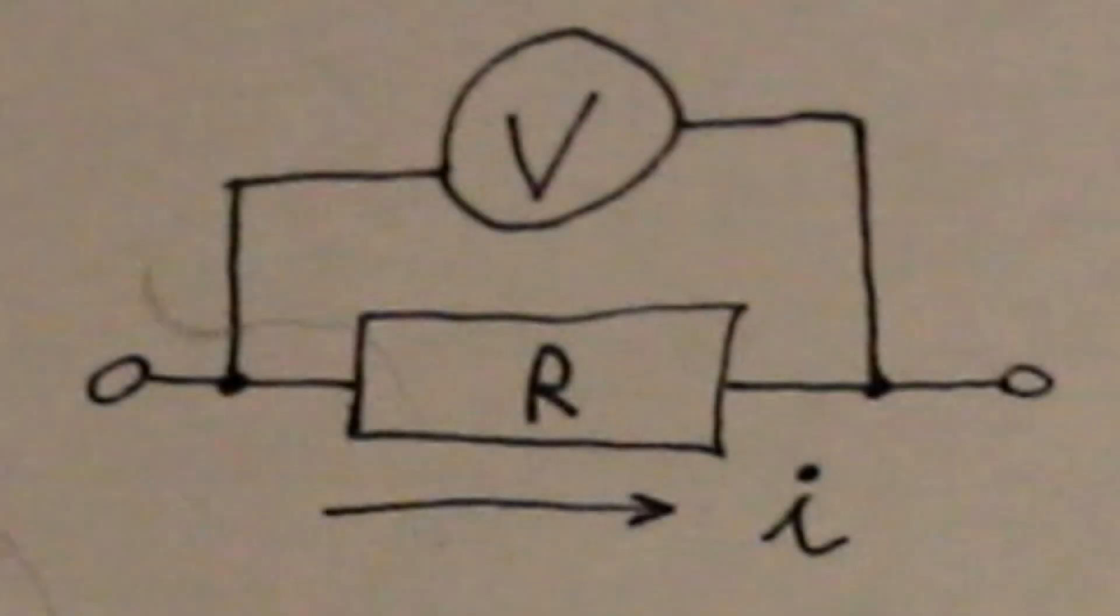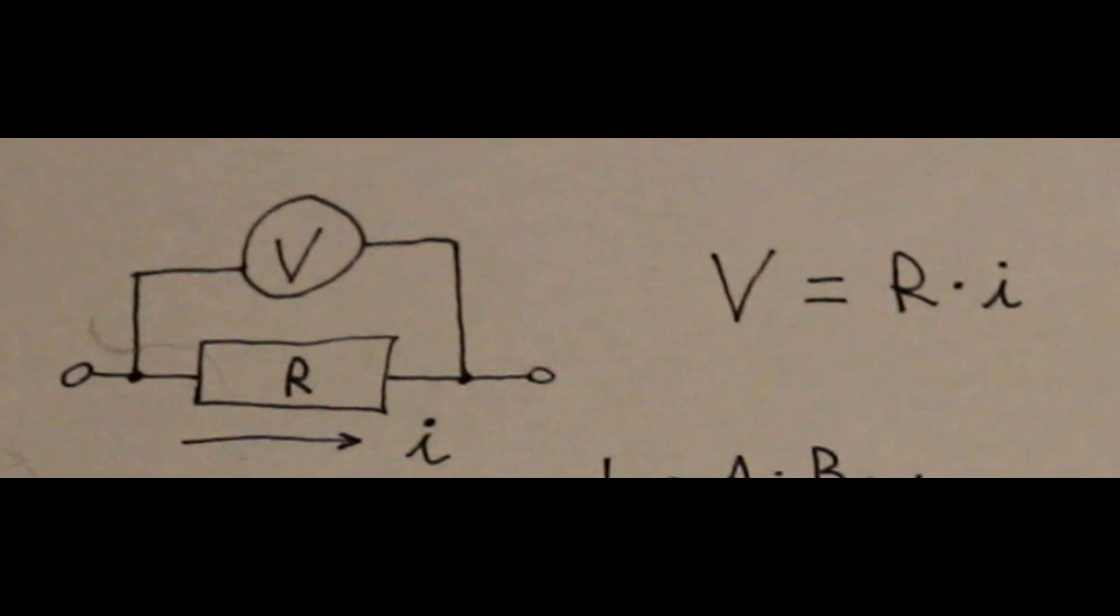In case you don't know, a shunt resistor is just a resistor of a known value at which we measure the voltage drop. We can then determine the current using Ohm's law, V equals R times I. So we have a simple linear relation between voltage and current. But this simple method works only for DC current.